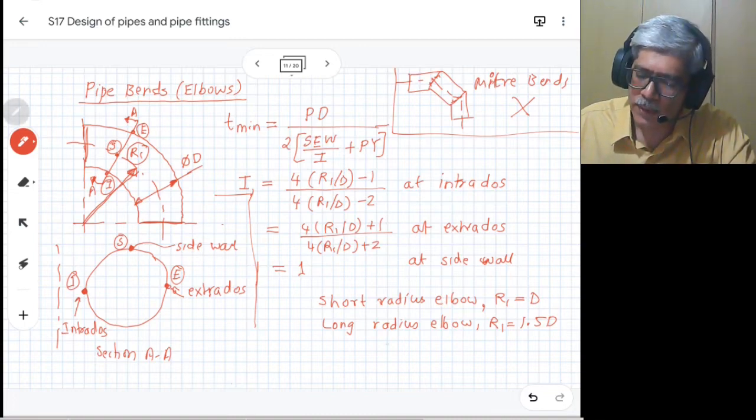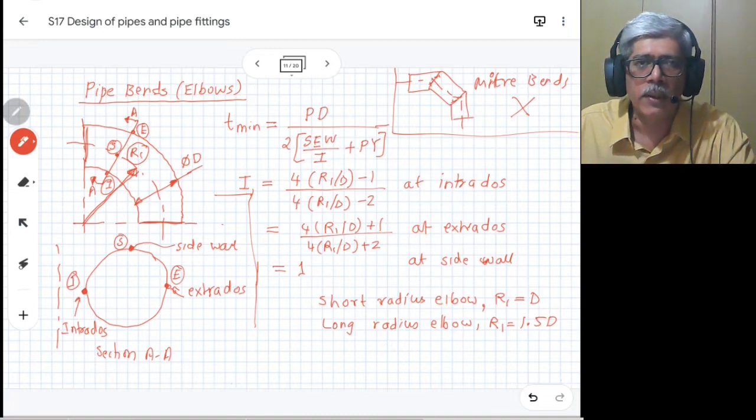Using this equation, we can calculate what is the minimum required thickness of the pipe. So let's take an example which will illustrate the use of this formula.